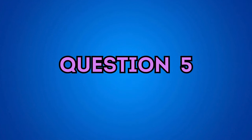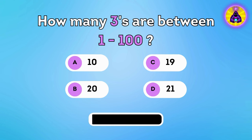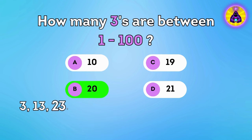Question 5. How many threes are between 1 and 100? Correct answer is 20. Don't forget that in number 33 are two threes.